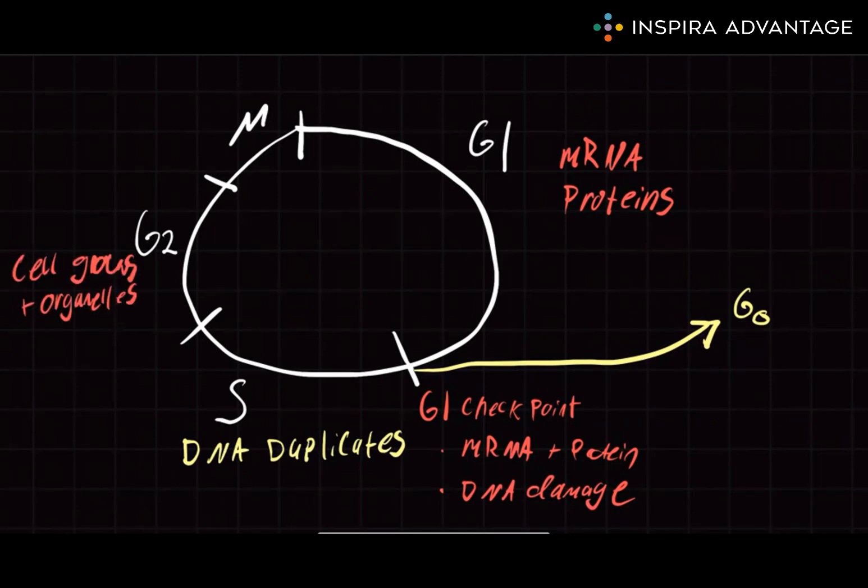After G2, we have our next checkpoint, again aptly named the G2 checkpoint. At this checkpoint, the cell will make sure that the cell is large enough and contains all the organelles needed. Additionally, the cell will make sure that all of the DNA was replicated during the earlier S phase. Once all of these requirements are met, the cell will finally begin splitting by mitosis.